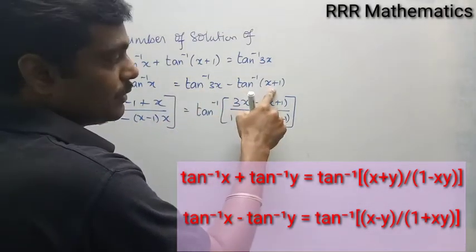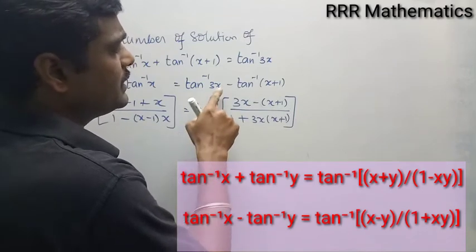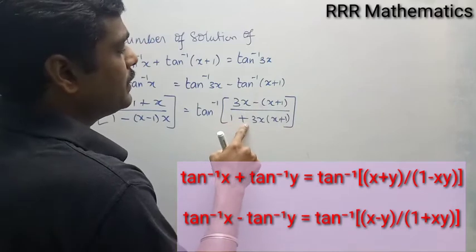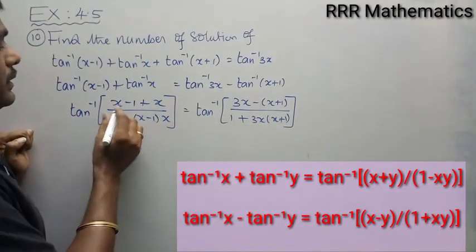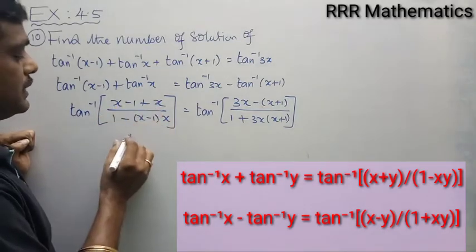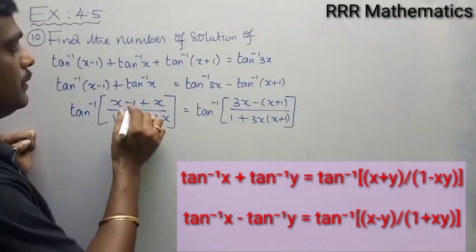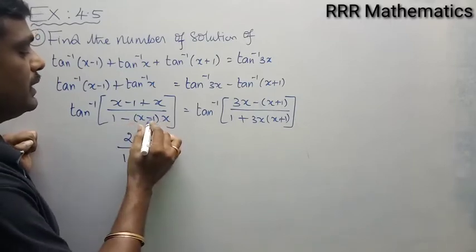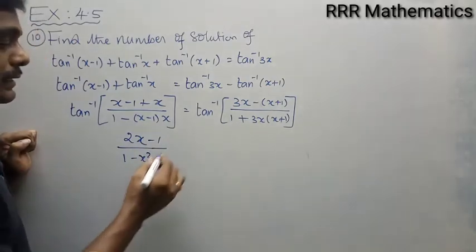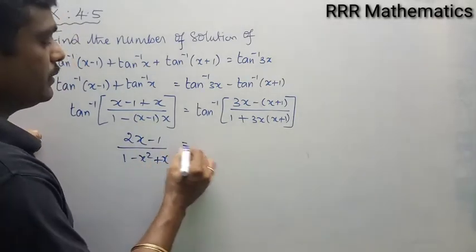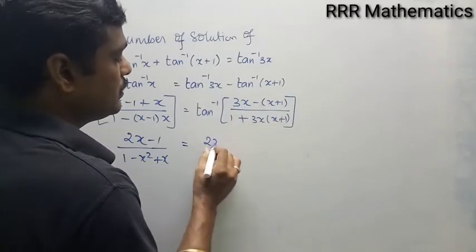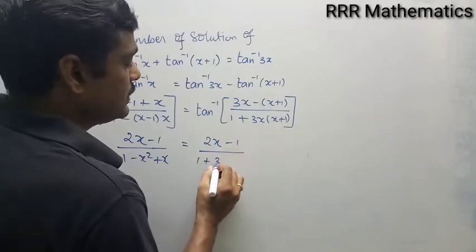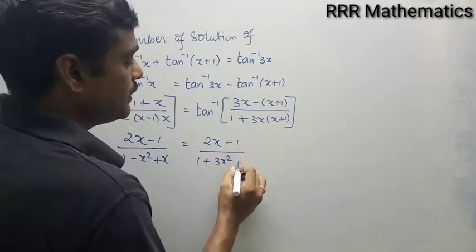On the right side, we have the form tan inverse x minus tan inverse y. Using the identity, this becomes tan inverse of (x minus y) divided by (1 plus x times y), that is tan inverse of (3x minus (x plus 1)) divided by (1 plus 3x times (x plus 1)), giving (2x minus 1) divided by (1 plus 3x squared plus 3x).